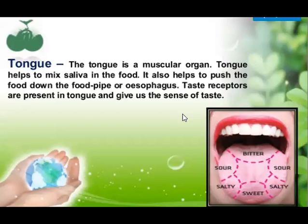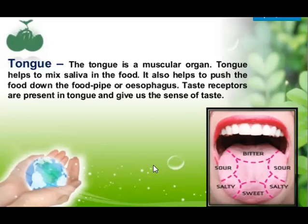Along with teeth and tongue, one more thing present in the mouth is the salivary glands. These glands are present inside our mouth and they secrete a digestive juice known as saliva. Saliva helps in washing the food, making the food soft, and also in the digestion of starch. When we mix saliva with the food we are chewing, it starts breaking down starch into simple sugar using an enzyme known as amylase, or salivary amylase. So the process of digestion starts from the mouth.